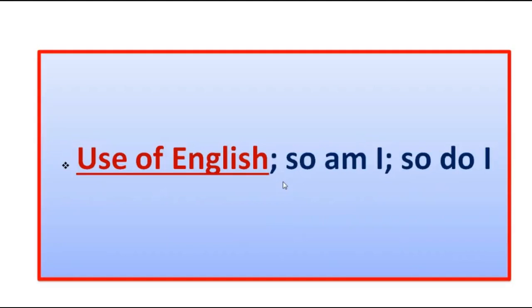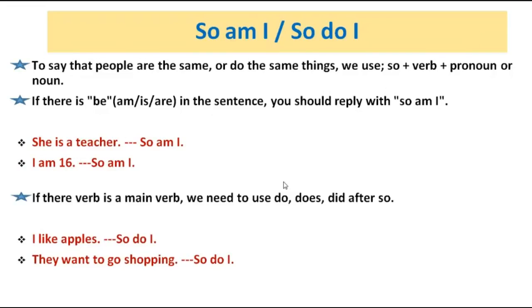Now it's time for use of English: so am I, so do I. To say that people are the same or do the same things, we use: so + verb + subject. If there is a form of 'be' in the sentence, you should reply with 'so am I.' For example: She's a teacher — so am I. I'm 16 — so am I.